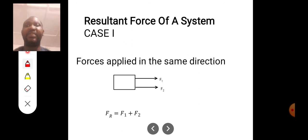We are going to look at resultant force of a system applying Newton's second law in different force systems. Here we have forces applied in the same direction. When forces are applied in the same direction, the resultant force will be F1 plus F2. Don't forget that resultant force is a product of mass and acceleration, and I have a video already that deals with this topic.